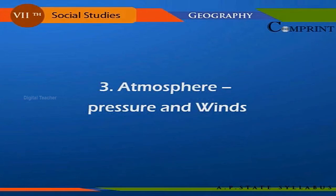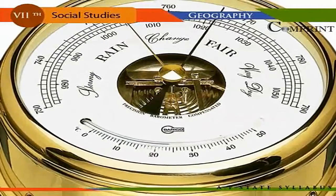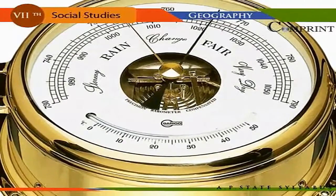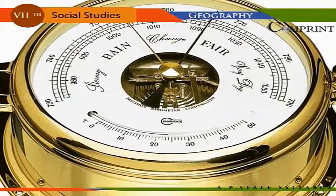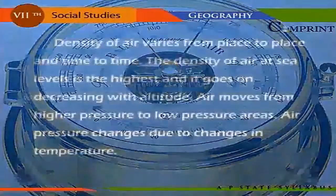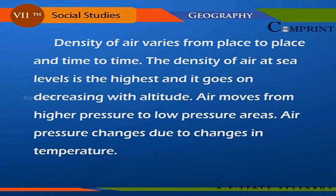Air, like any other object, has weight and exerts pressure. Atmospheric pressure is the weight of a vertical column of air at a certain place. The instrument which measures air pressure is known as a barometer. The density of air varies from place to place and time to time. The density of air at sea level is the highest and decreases with altitude. Air moves from higher pressure to lower pressure areas, and air pressure changes due to changes in temperature.